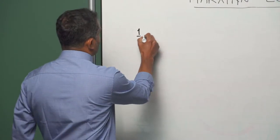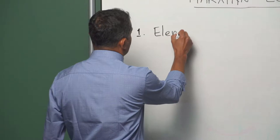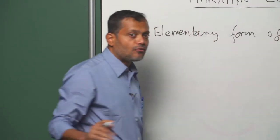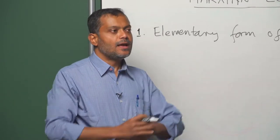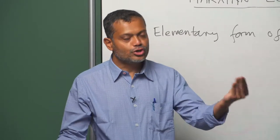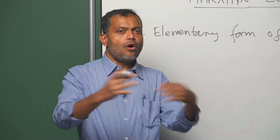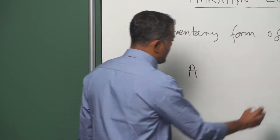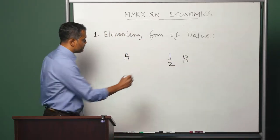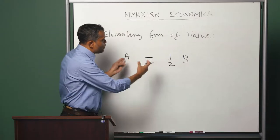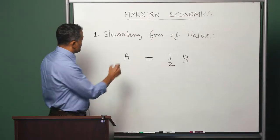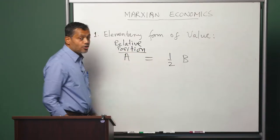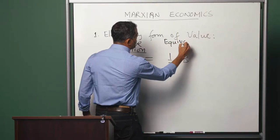To understand the notion of money, we will go through a three-step argument. The first step is what Marx calls the elementary form of value. In the elementary form of value, we are looking at the exchange between two commodities. Let us say we are looking at the exchange between bushels of wheat and shirts, or more abstractly, the exchange between two commodities A and B. So commodity A exchanges with half units of commodity B. This is the exchange we are looking at. When we look at this exchange between two commodities, we say that commodity A occupies the relative position and commodity B occupies the equivalent position.